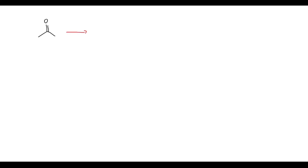Let's look at a reaction that uses one of these compounds. We take acetone and react it with sodium borohydride. This reaction is usually done in an alcohol solvent like methanol or ethanol, and what we get is the alcohol — a reduction reaction where the carbon-oxygen double bond has changed to a single bond and we've added a molecule of H₂ across this bond.